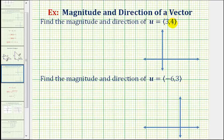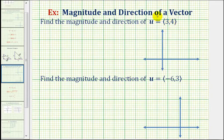Now we'll look at two examples of determining the magnitude and direction of a vector given in component form. For the first example, we're going to sketch the vector and then use what we know about right triangles to determine the magnitude and direction. For the second example, we'll use formulas for the magnitude and direction that can save us some time.